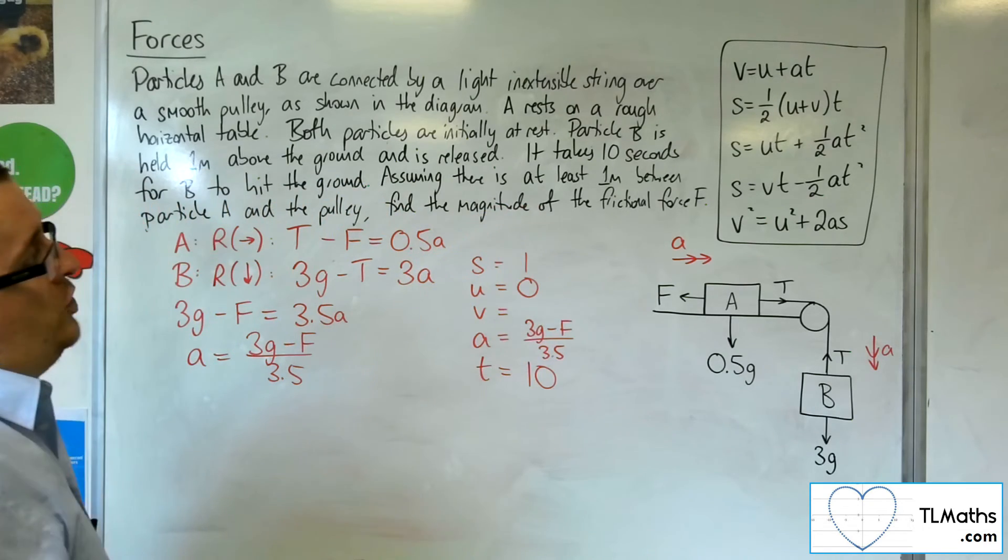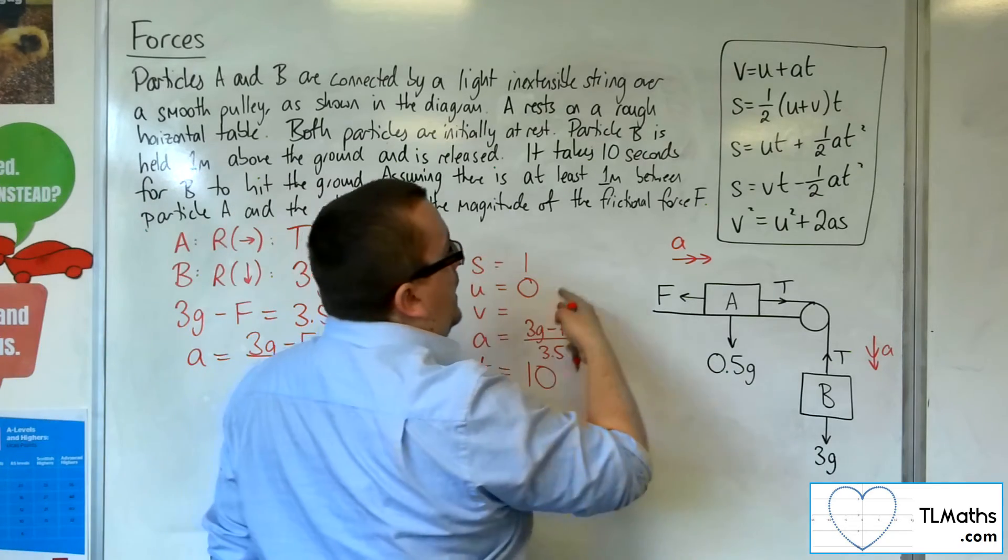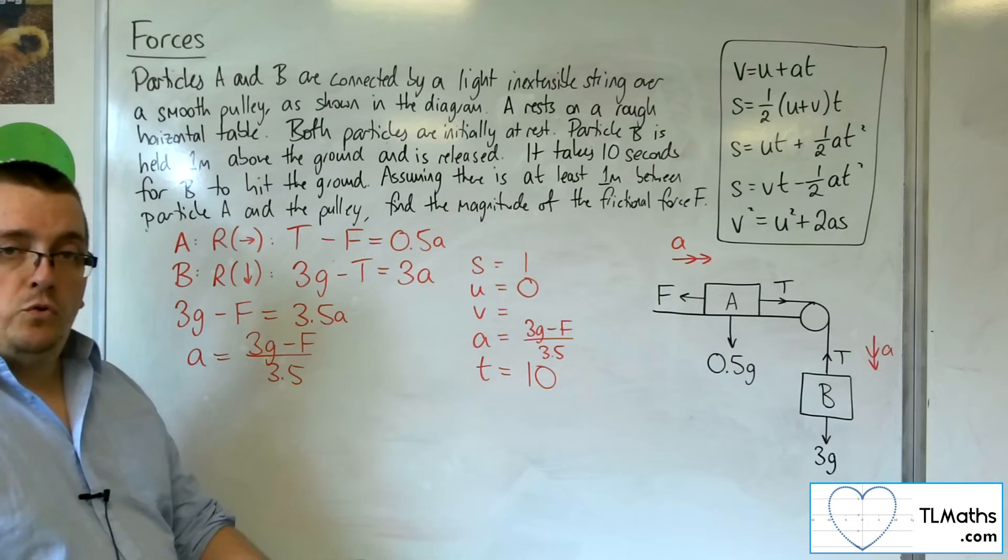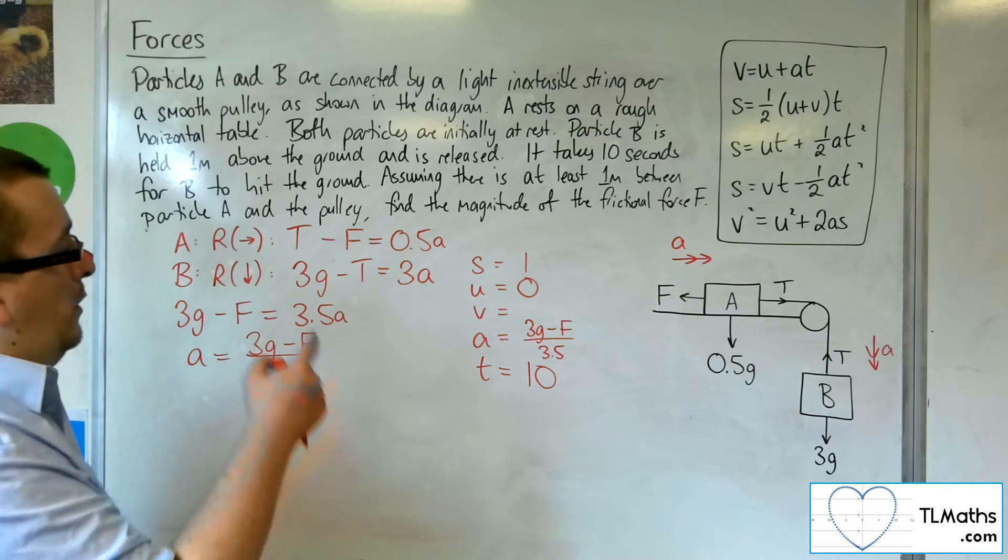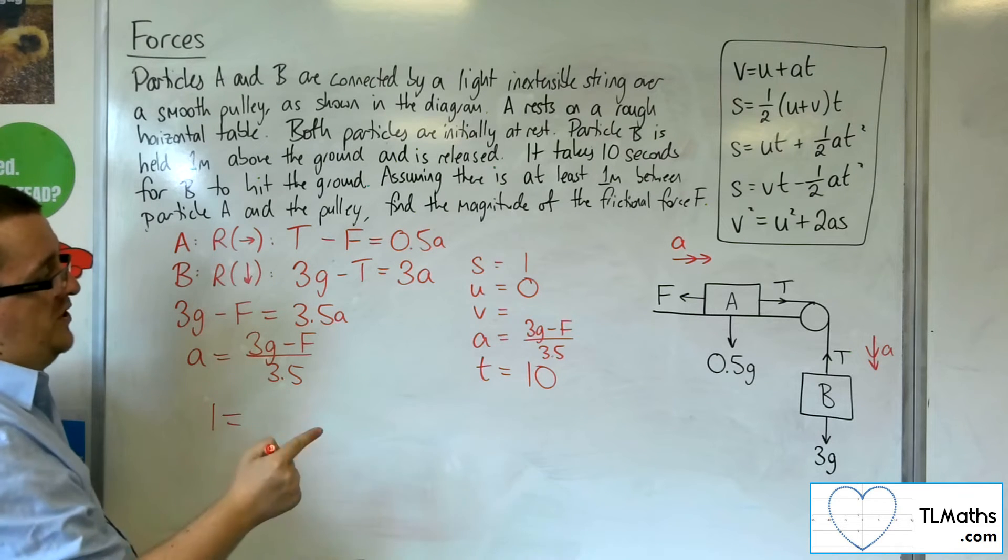So, if I had an equation that has SUAT, so the one without V, which is that number 3, I could substitute everything that I know into that third equation. And hopefully, then, I've got one equation with one unknown.